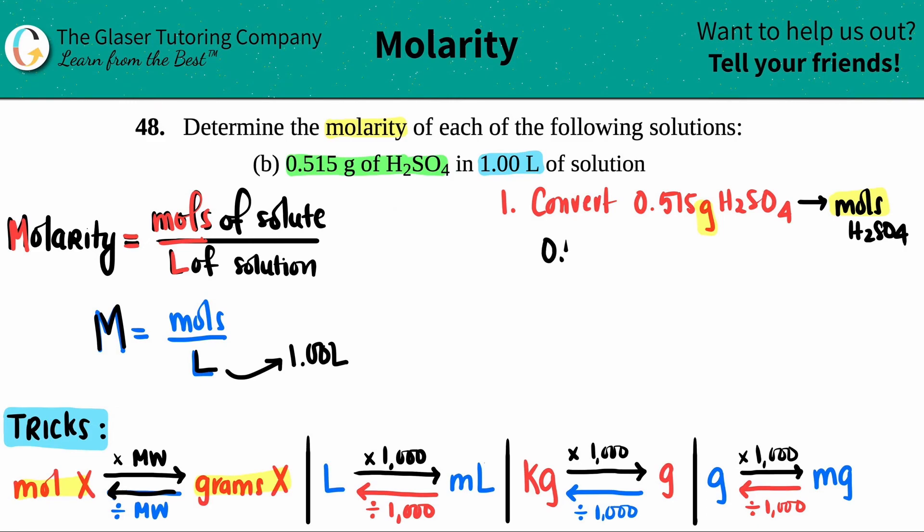I'm going to take 0.515 grams of H2SO4 and divide by the molecular weight. What is the molecular weight? The molecular weight of anything is on the periodic table—we're using the masses to get what we want.